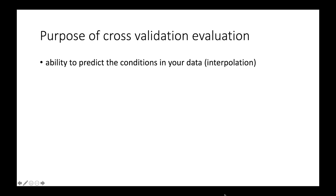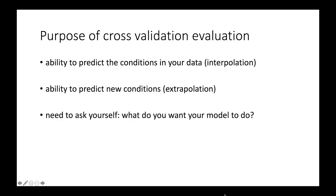So what is the purpose of cross-validation evaluation? You need to make a decision on what you want your model to be able to do. The ability to predict the conditions in your training data is interpolation. These are the conditions known to the model. The ability to predict new conditions is called extrapolation. When you make an extrapolation, you might be predicting to a new area of space, or a different time, maybe the future or the past. And those conditions might not be known to the model. So you need to ask yourself, what do you want your model to do? Then you can subset your data to make the appropriate model evaluations and rate the model's ability to do those things.